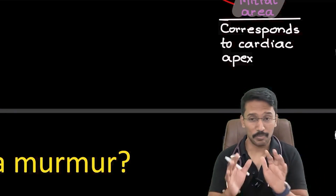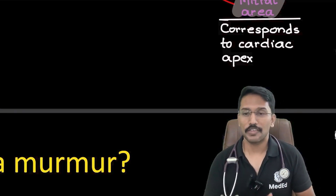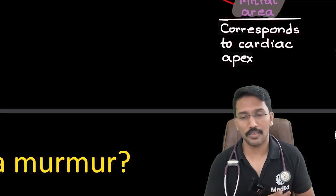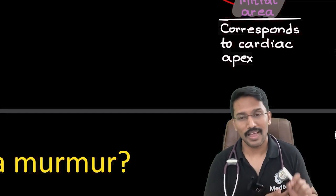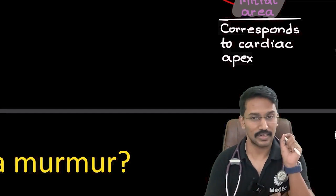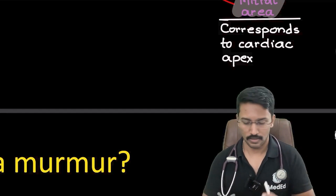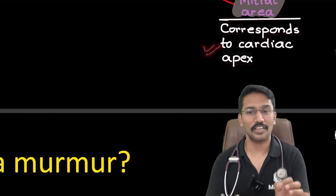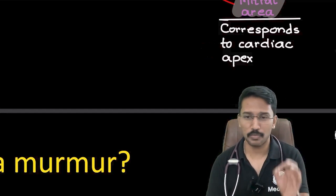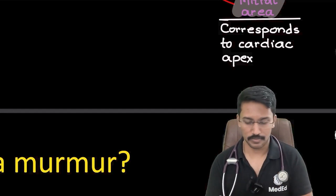At PG level, it is expected that he will first palpate for the apex, feel where it is located, and then auscultate exactly there. That is the expectation, because mitral area corresponds to the apex and not a fixed location. If the apex is displaced, the area will also be displaced.